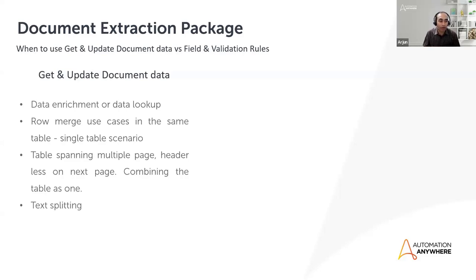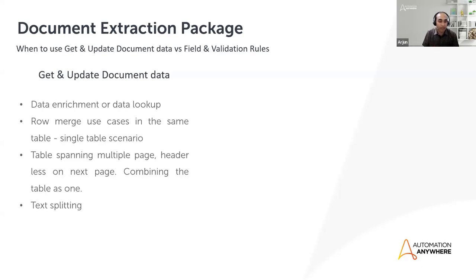Whenever you want to do any kind of data enrichment or data lookup, that's when get and update document data will be useful. For example, we looked at how to update the invoice date with the current date — that means looking up data from external APIs. A couple of other useful use cases: if you want to merge rows where one row has three or four lines and only one or two are being picked up, this can be useful. Also, if a table spans across multiple pages and the second page has no header, it will also be useful. And for text splitting — if you have an address and want to remove certain parts, you can always do that.